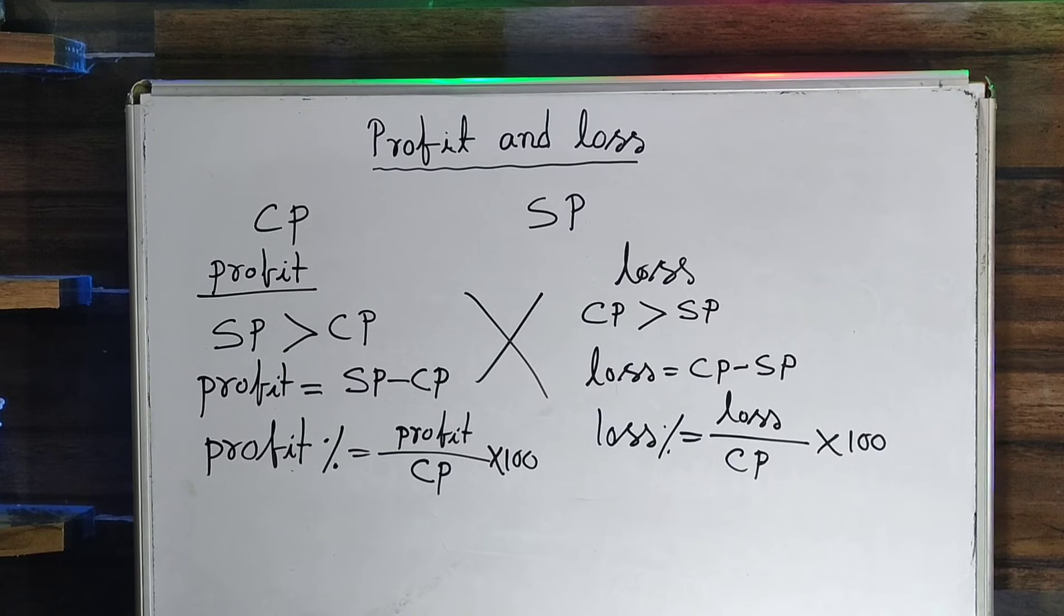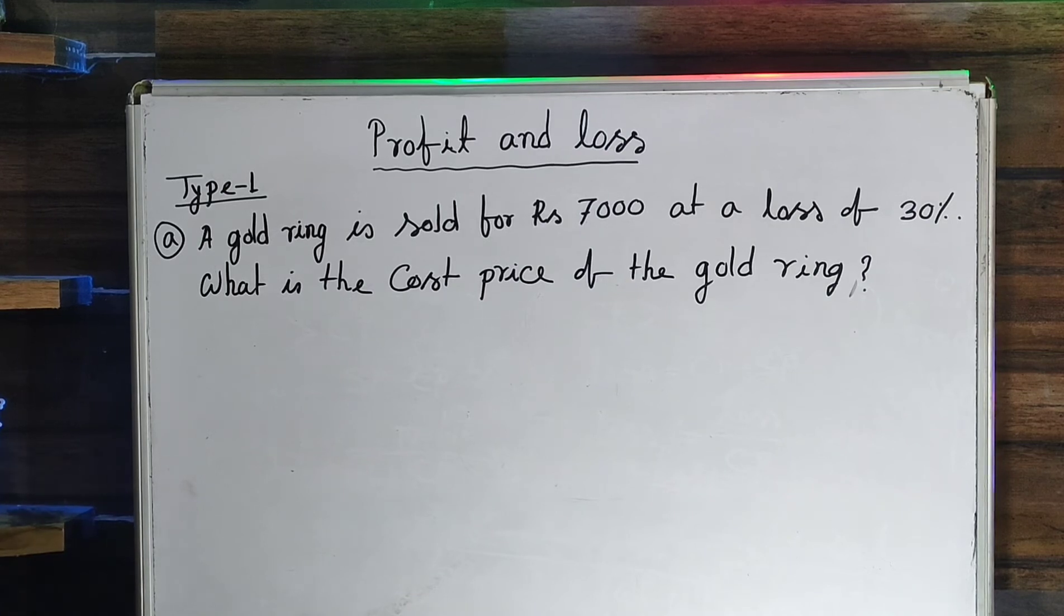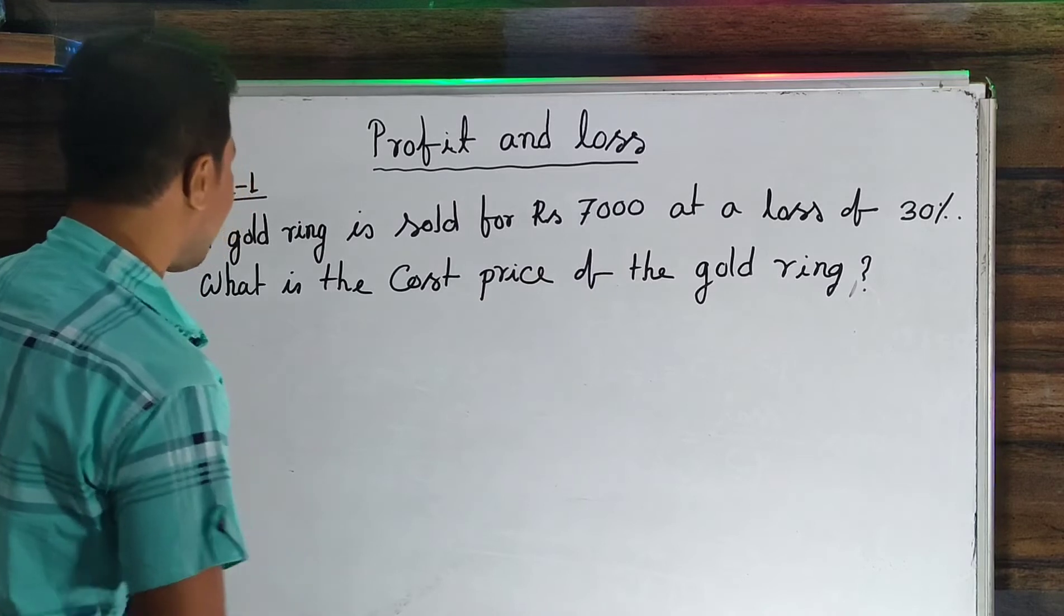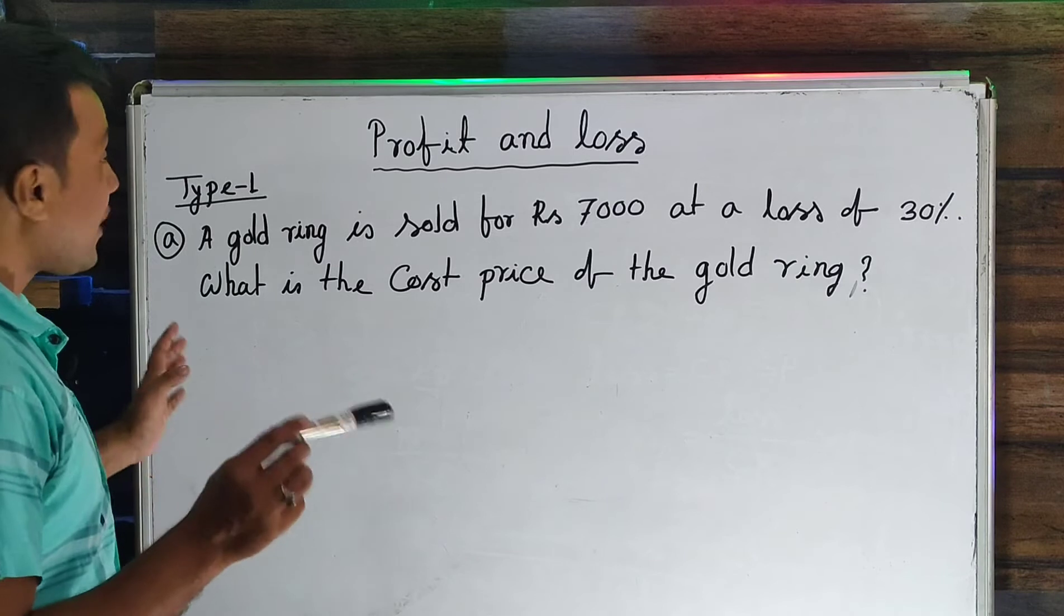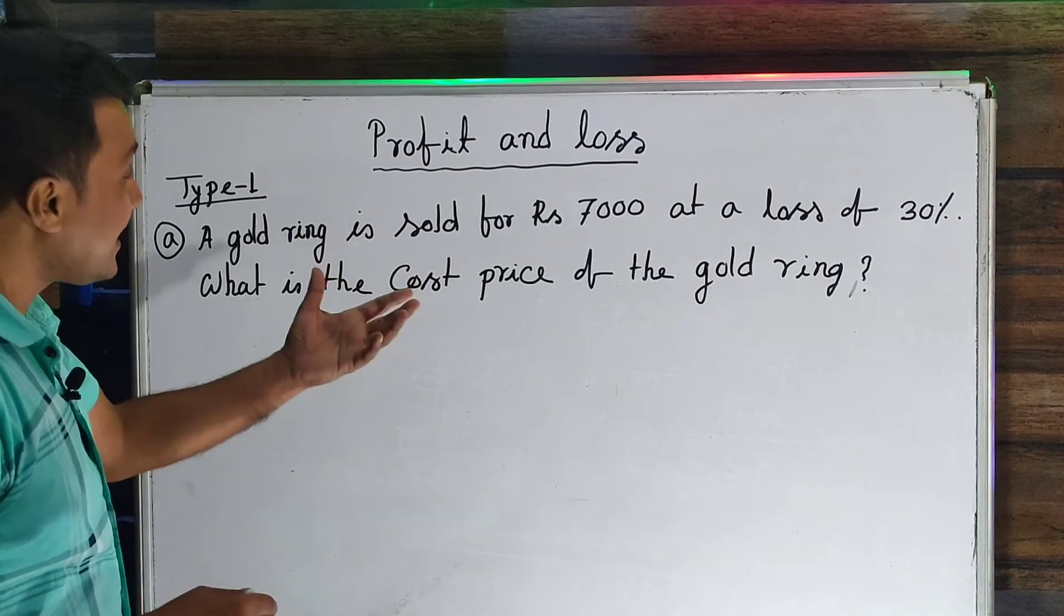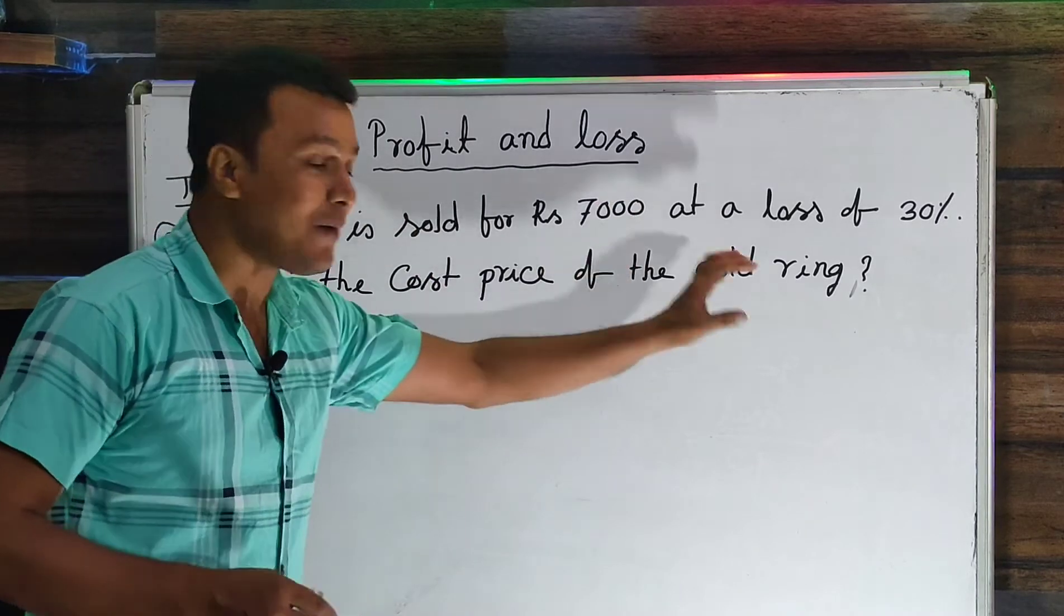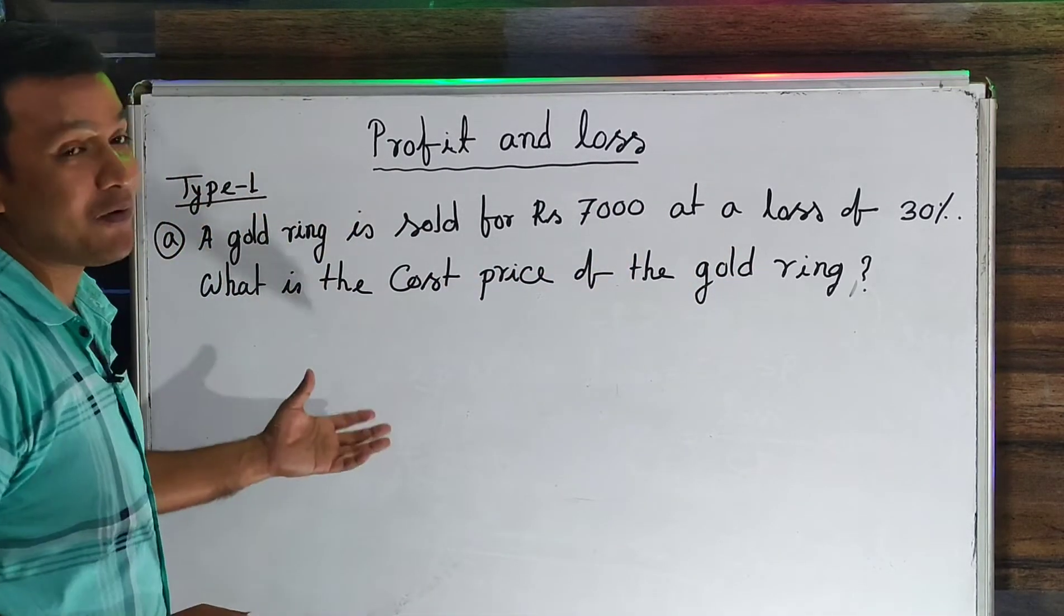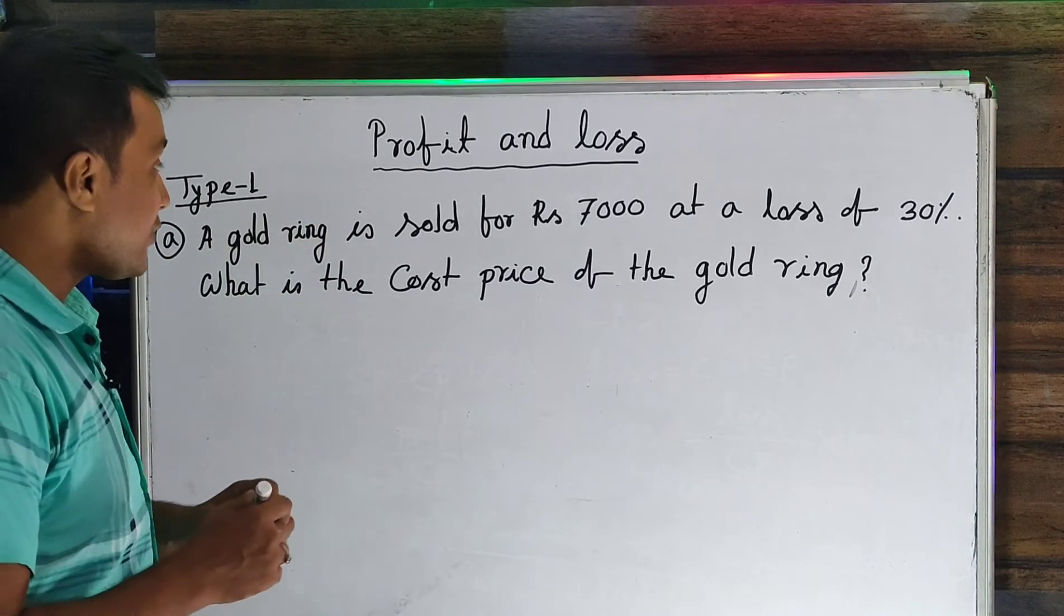The first question is: A shopkeeper bought goods for 30% loss. What is the cost price if selling price is 7000? What is the cost price? I will apply the shortcut.